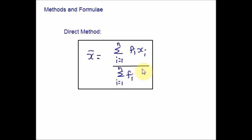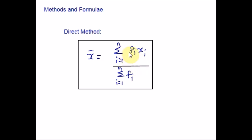Here is the formula to find the mean for grouped data using the direct method. X̄ is the mean of the given data. The denominator, summation of fi from i=1 to n, is the sum of all the frequencies, denoted by capital N. The numerator, summation of fi·xi from i=1 to n, is the sum of the products of the frequencies and their corresponding observations. So this is the formula to find the mean.